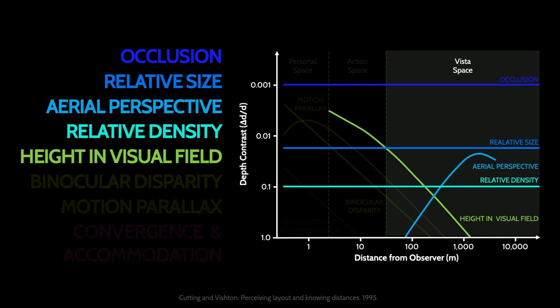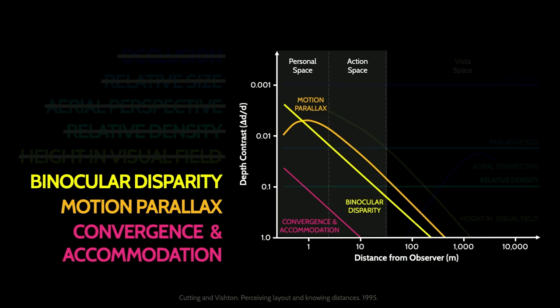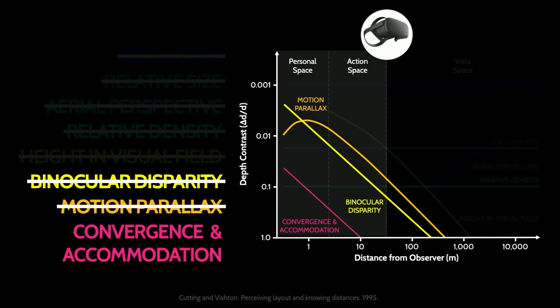We can design displays that faultlessly recreate vista-space cues — they're called televisions. Where we haven't been is where things are hard: what Vishael and Cutting call the personal and action spaces. Everything within my reach — the people I could hit by throwing this presentation remote — you are in my action space. In that space, new depth cues come into play: binocular disparity, motion parallax, and vergence and accommodation. If you're working on VR and AR, you're working on these. The one thing we've failed to depict in any display or capture technology to date is vergence and accommodation cues, which we'll be talking about today. It's actually the least important cue, but it's the only thing we have left.